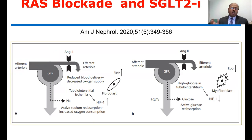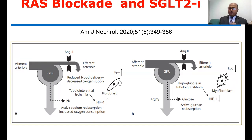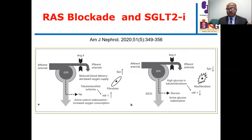If we use RAS blockade—either ACE inhibitors or angiotensin receptor blockers—this inhibits the actions of angiotensin 2 with subsequent reduction of erythropoietin. If we use SGLT2 inhibitors, this is associated with improvement of hypoxia-inducible factor and increased erythropoietin production. So RAS blockade and SGLT2 inhibitors act in opposite directions.